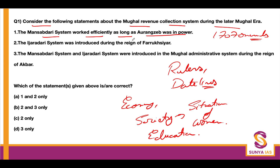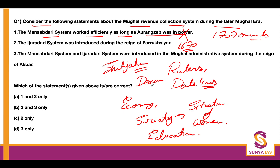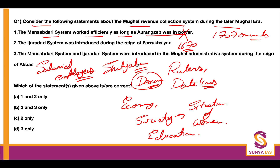The first statement says the Mansabdari system worked efficiently as long as Aurangzeb was in power. Aurangzeb actually started facing difficulty in tax collection from 1670 onwards. The Mansabdari system had its crisis from the time of Shah Jahan himself. In Aurangzeb's time, after taking over the Deccan in the 1680s, he started putting salaried employees for revenue collection — which tells us he understood the Mansabdari system was corrupt enough to no longer be the main means of collecting revenue from Mughal Subhas. So the first statement is wrong.